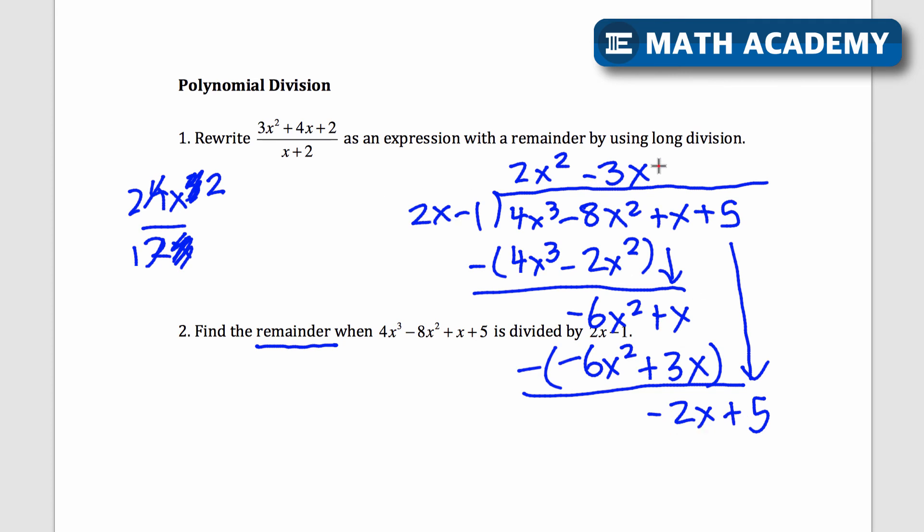2x goes into negative 2x negative 1 times. Negative 1 times 2x minus 1 will be negative 2x plus 1. I'm going to subtract all this. These will cancel out. 5 minus 1 is 4. And that's my remainder because I don't have any other terms to bring down. So it will be a remainder 4. I could write this as plus 4 over 2x minus 1. But in any case, the answer to this one is looking for the remainder, and that's a remainder of 4.